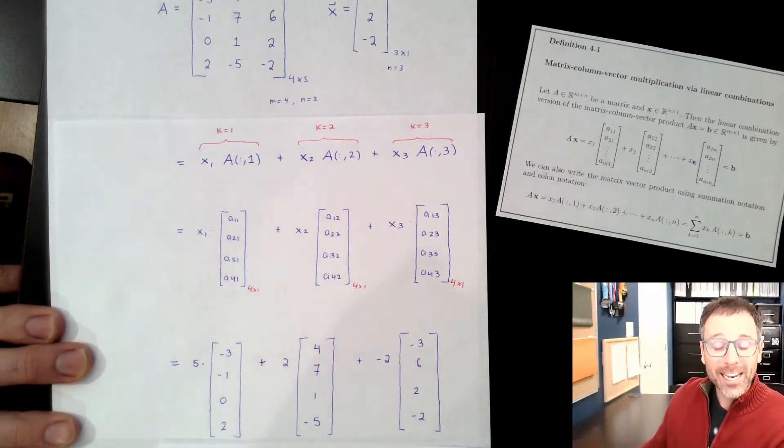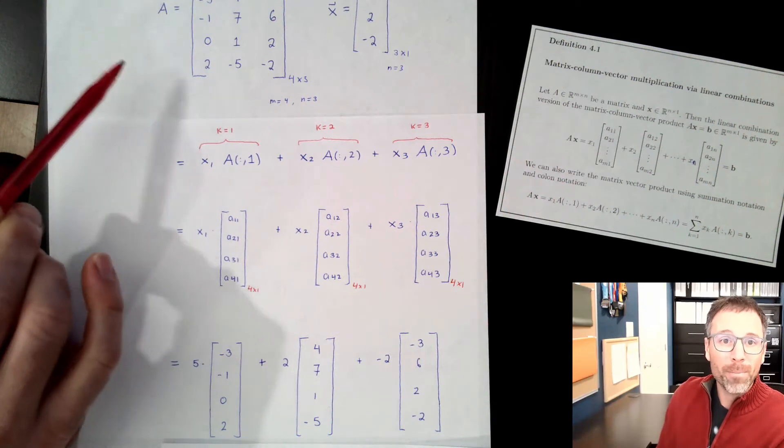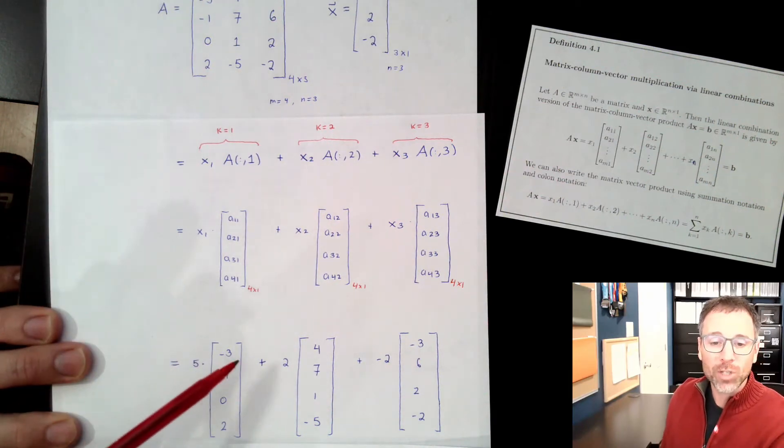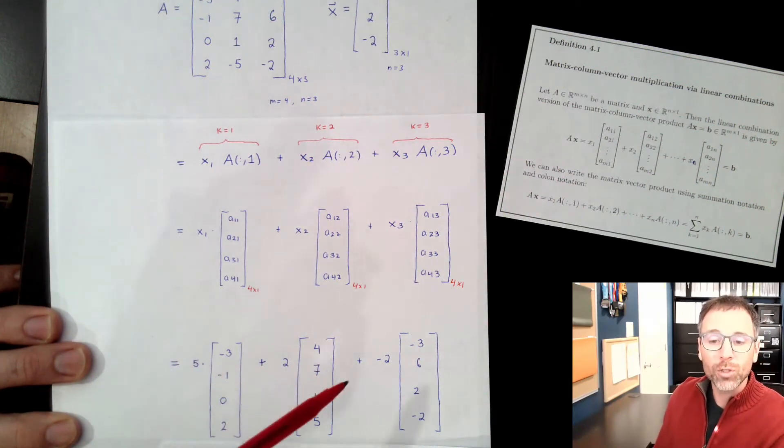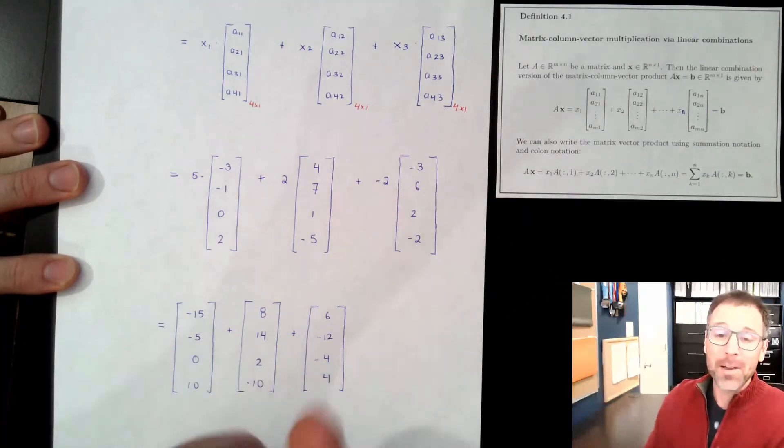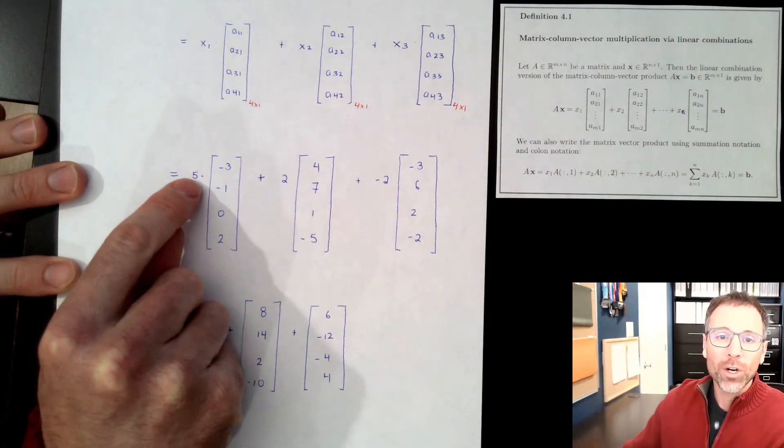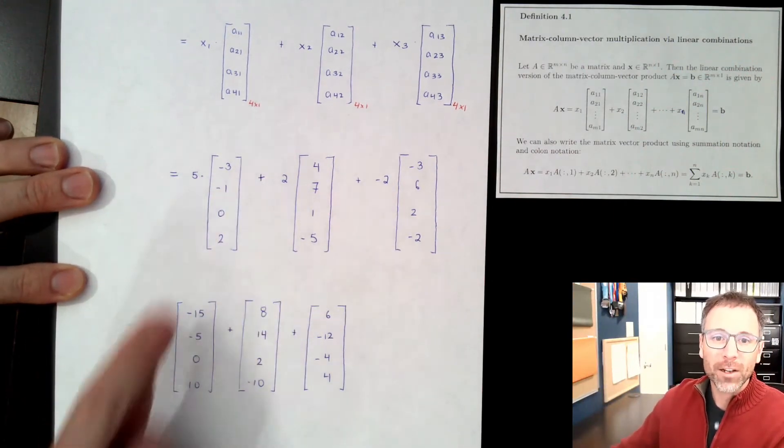Now, formally speaking, we have satisfied this definition. We now know that the output A times x is 5 times column 1 plus 2 times column 2 plus 3 times column 3. From the standpoint of the definition, I would actually, I like this. I'm done with the problem. However, we might actually want to calculate what that is. So in order to do that, we bring in the scalar-vector multiplication.